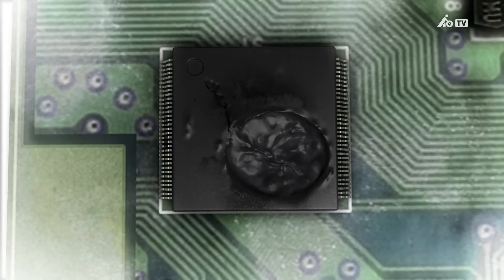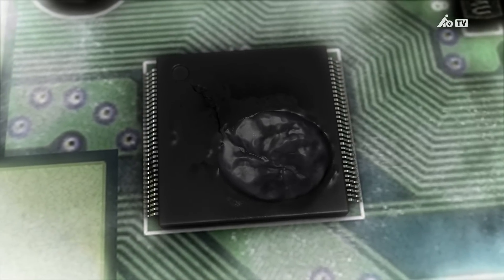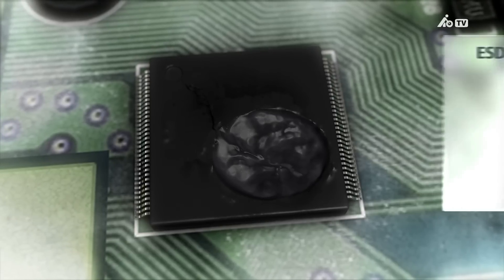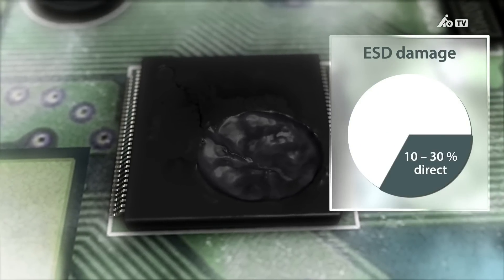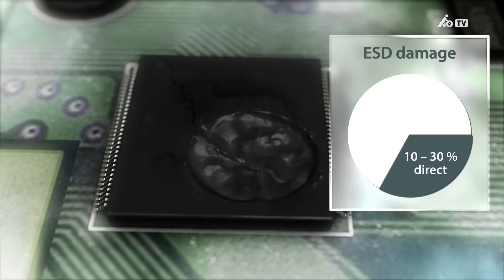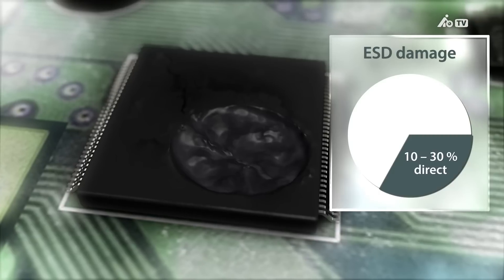With a direct fault, the device is either visibly damaged or its function is impaired. Damage like this can be sustained when taking measurements, for example. However, less than 30% of all damage caused by an ESD event is direct damage. Such faults are relatively easy to identify and can be remedied at a comparatively low cost.